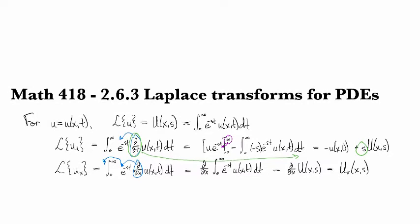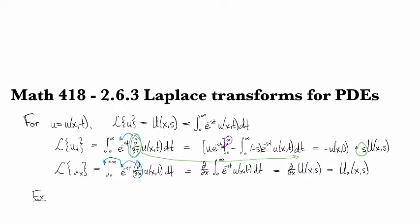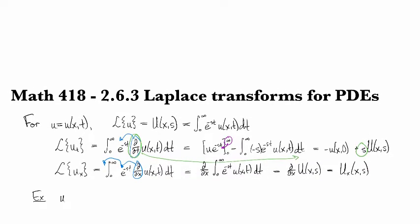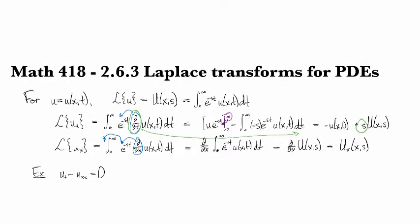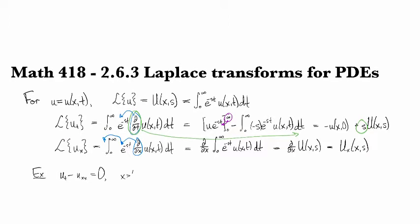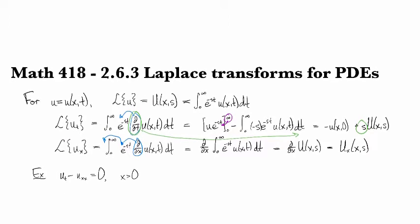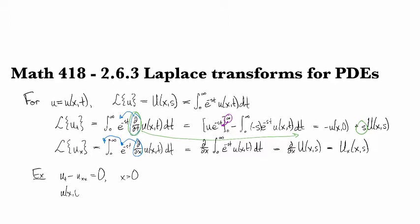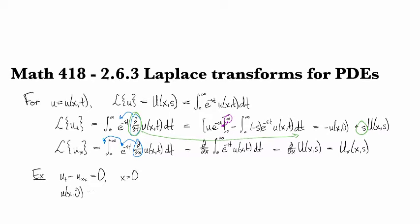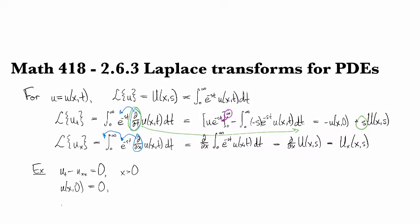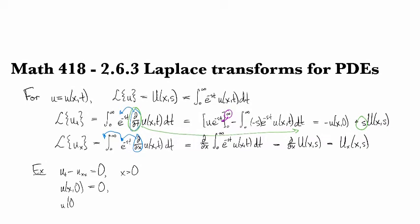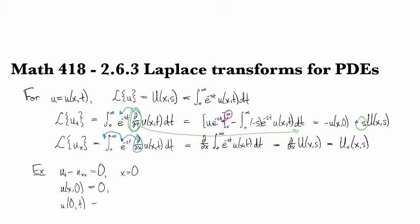Okay, so how do we use this to solve, say, the heat equation? Let's do u_t minus u_xx equals zero. And we'll do it on x positive. And we'll do u(x,0) fixed at zero, and we'll do u(0,t) equal to one.